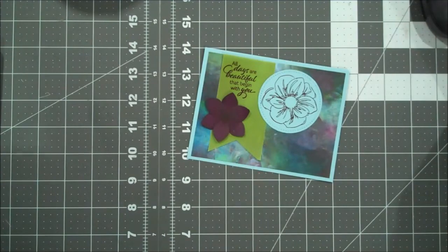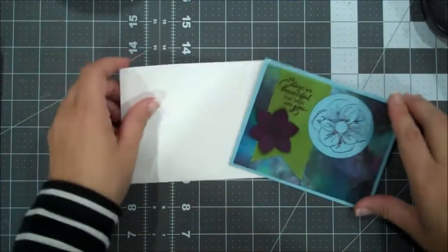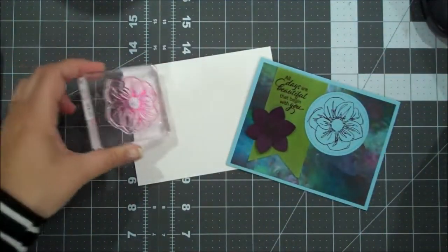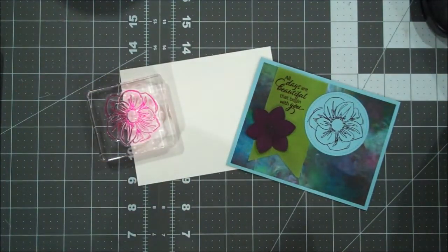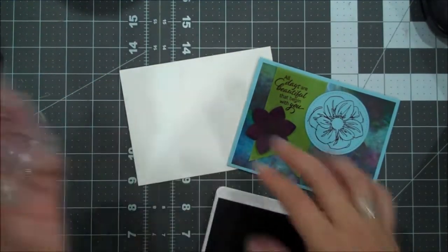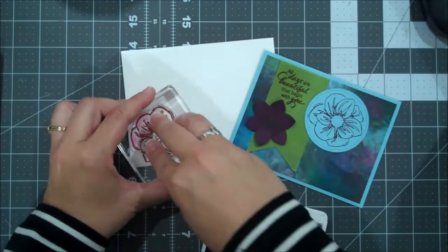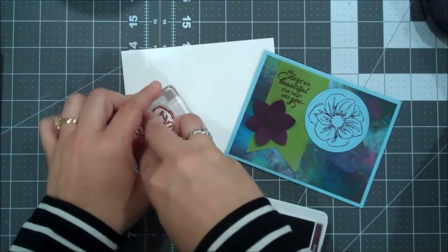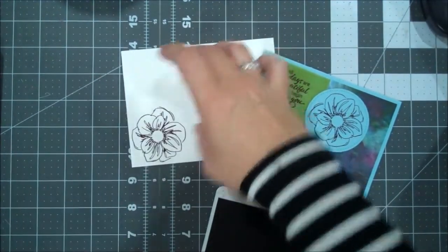Let's grab a whisper white envelope. And just to coordinate, we will go right back to our big flower and our blackberry bliss. And we will stamp one of those right here on the edge of our envelope. Beautiful.